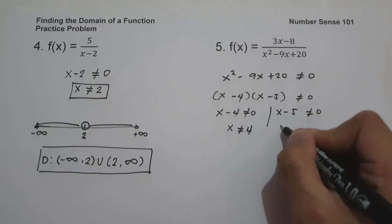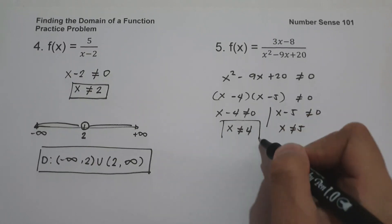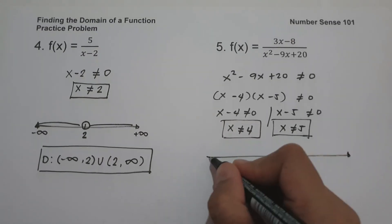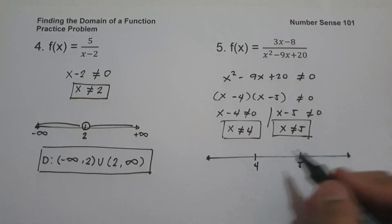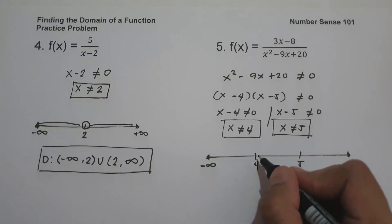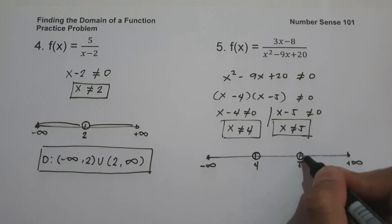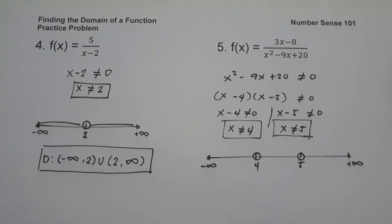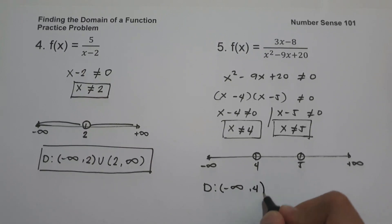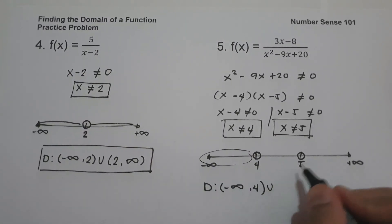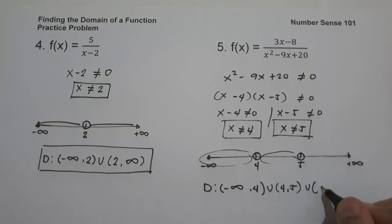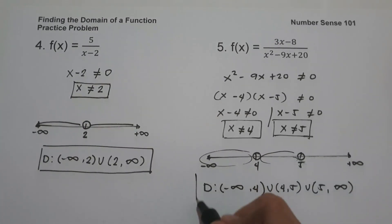So x can be anything except positive 4 and positive 5. Drawing a number line with 4 and 5 marked, we use open circles because they are not included. The domain is from negative infinity up to 4, union 4 to 5, union 5 up to positive infinity, and this is our answer.